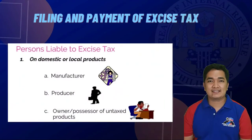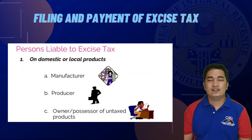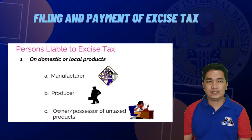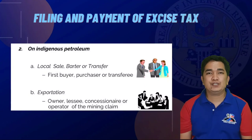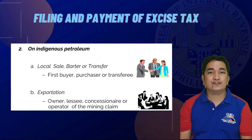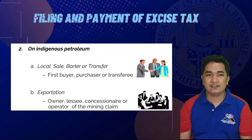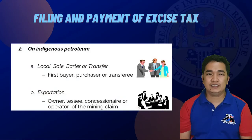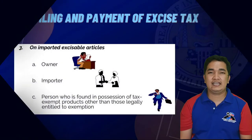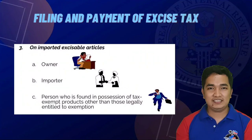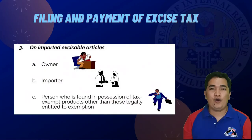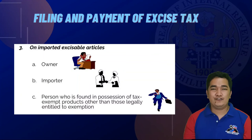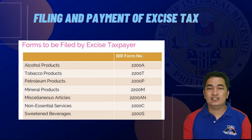Persons liable to excise tax: On domestic or local products, we have the manufacturer, the producer, or the owner or possessor of untaxed products. On indigenous petroleum, for local sale, barter, or transfer, it is the first buyer, purchaser, or transferee. For exportation, it is the owner, lessee, concessionaire, or operator of the mining claim. On imported excisable articles, persons liable are the owner, importer, or person found in possession of tax-exempt products other than those legally entitled to exemption.